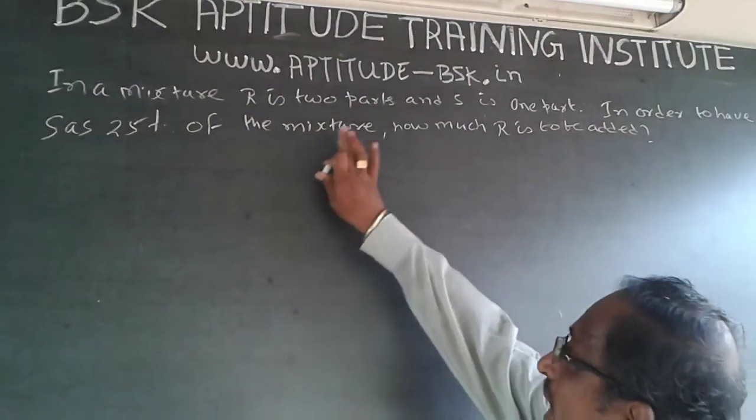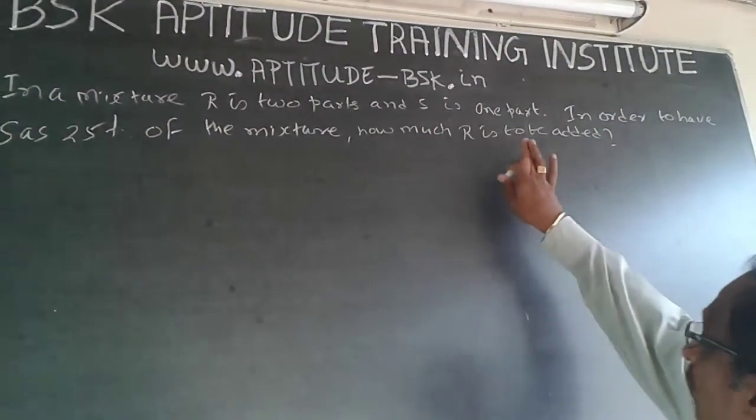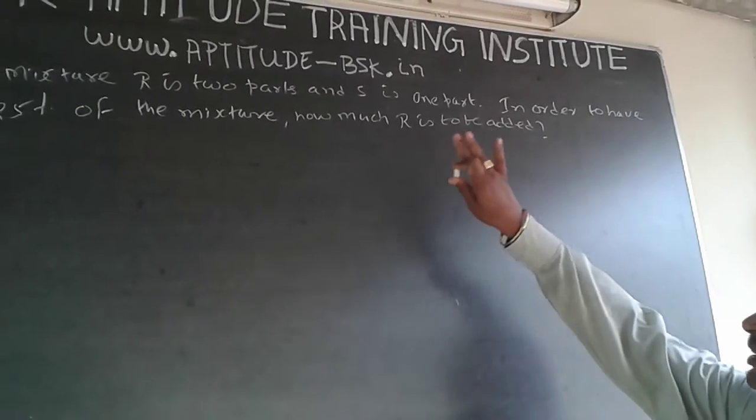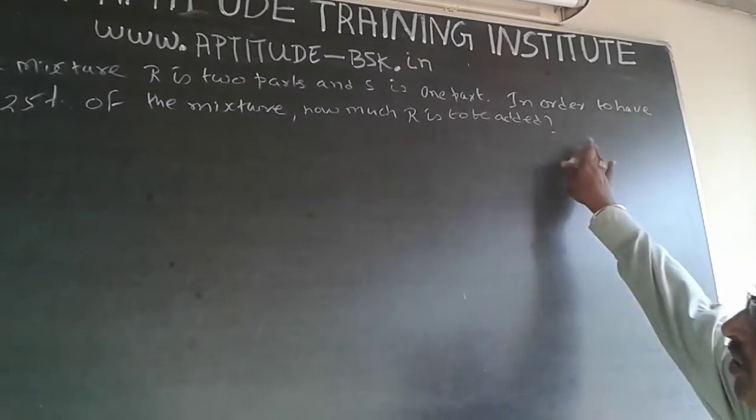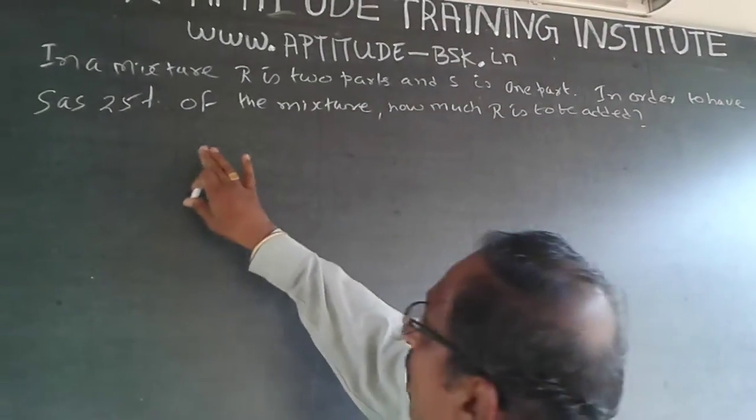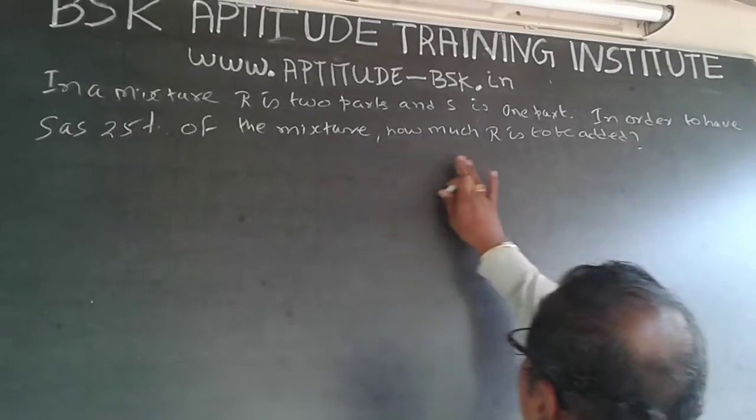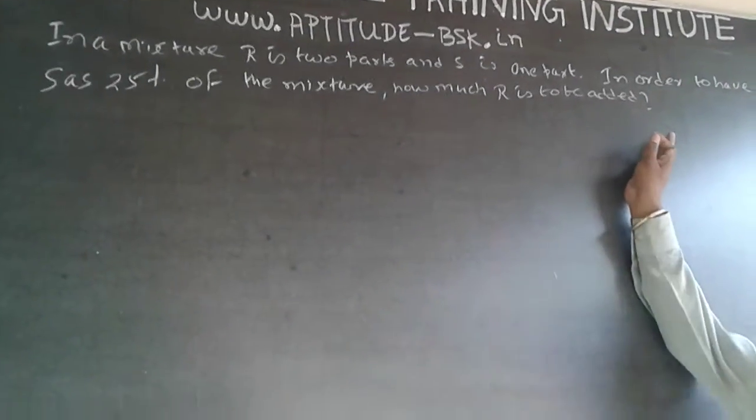The question is, in a mixture R is 2 parts and S is 1 part. In order to have S as 28% of the mixture, how much R is to be added?